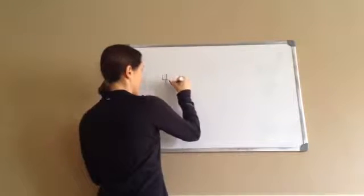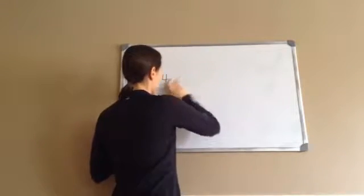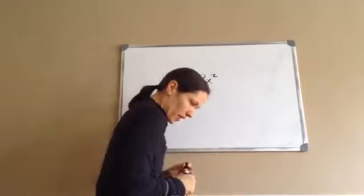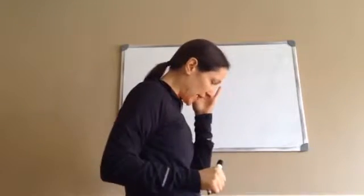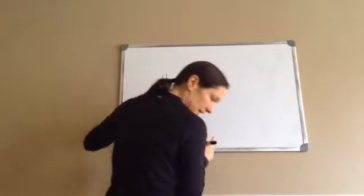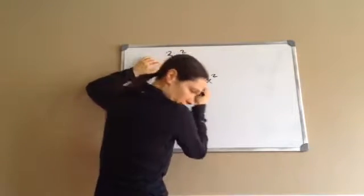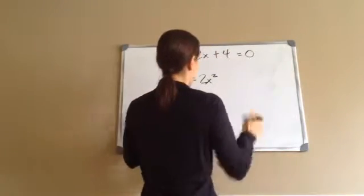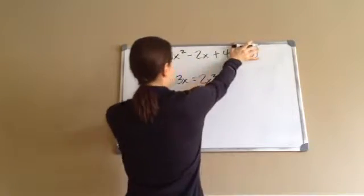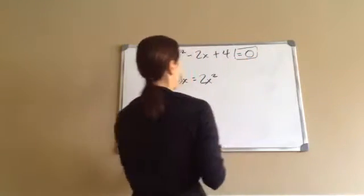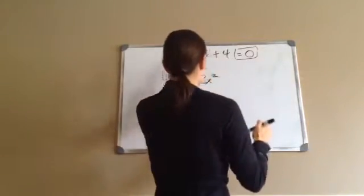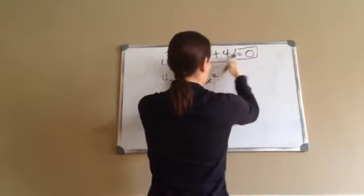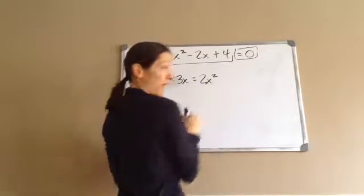The first thing I want you to see is this says 4 minus 3x equals 2x squared. What we're trying to figure out is how to come up with standard form. This is standard form: 3x squared minus 2x plus 4 equals 0. This equals 0 does not have to be there because you're used to seeing them like that, but it's okay. So we're trying to come up with this kind of form: x squared minus 2x plus 4 equals 0.